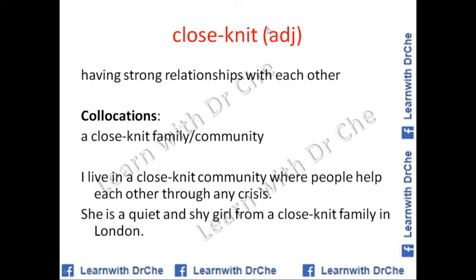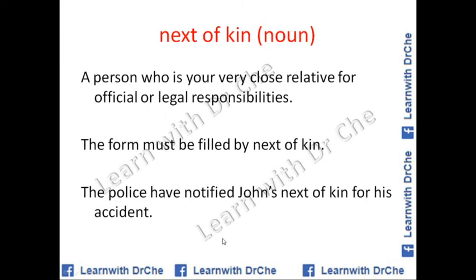'Close-knit' is a very good adjective to describe a family. Collocations are 'a close-knit family' and 'a close-knit community.' It means having strong relationships with each other. Note: the K in 'knit' is silent. 'I live in a close-knit community where people help each other through crisis.' 'She is a quiet and shy girl from a close-knit family in London.'